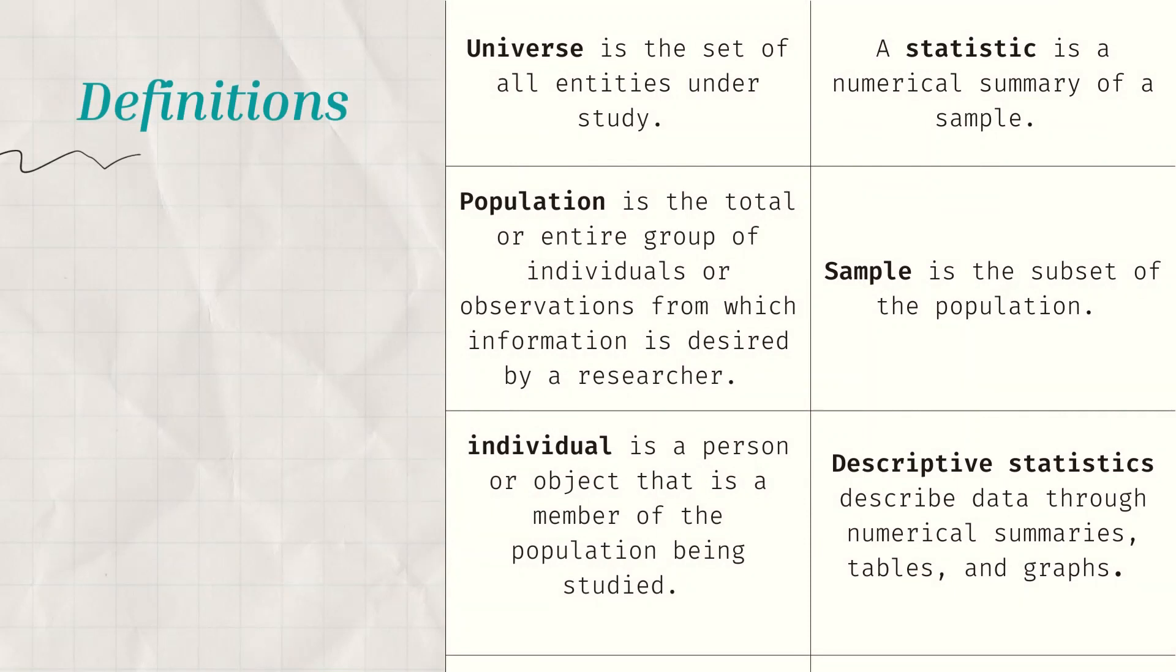We have different definitions that you have to be familiar with when studying statistics. First, the universe. When we say universe, this is the set of all the entities under the study or under study. Next, population. Population is smaller than the universe. This is the total or entire group of individuals or observations from which information is desired by a researcher. So this is the expected respondents of the researchers. Now, individual. This is a person or an object that is member of the population that is being studied.